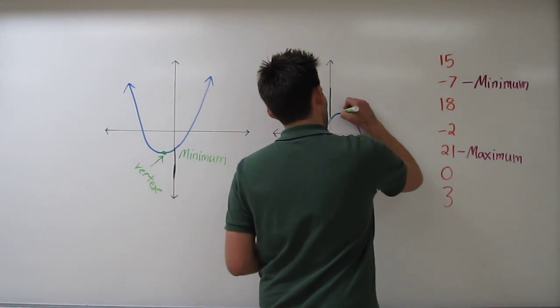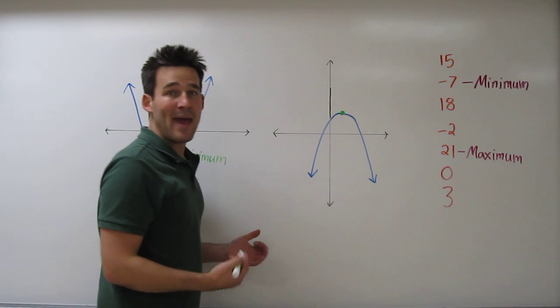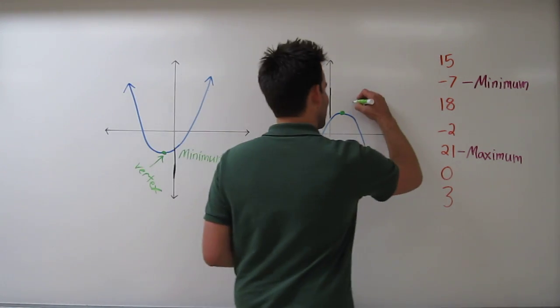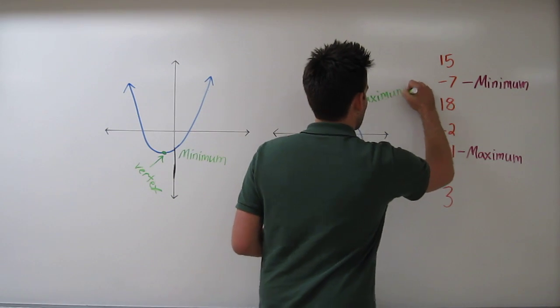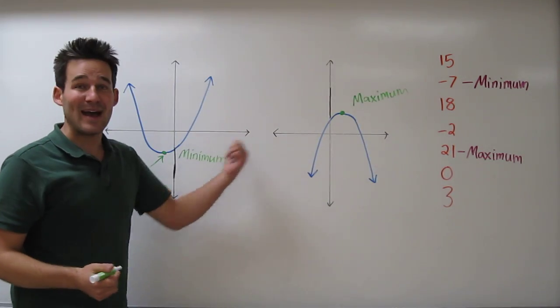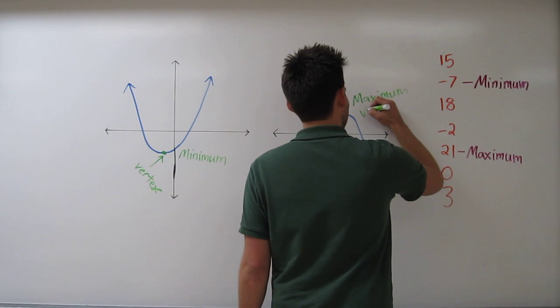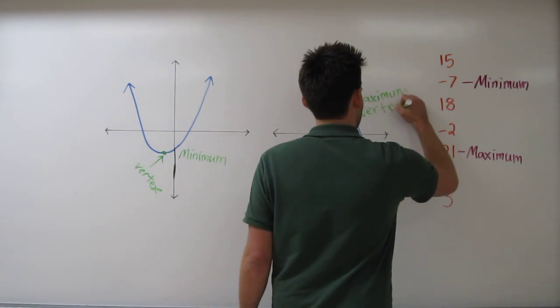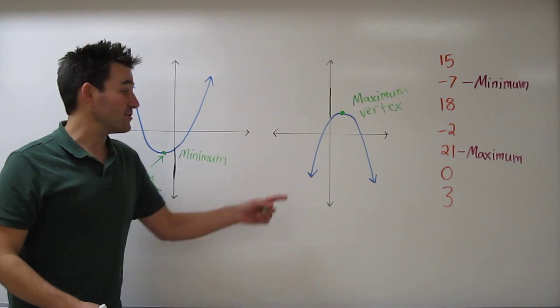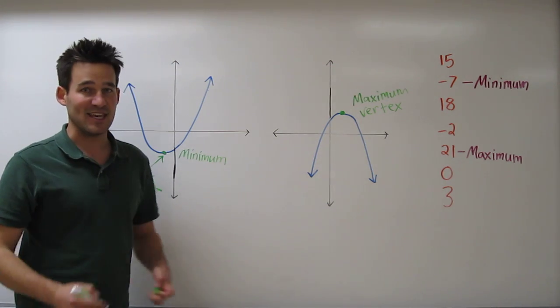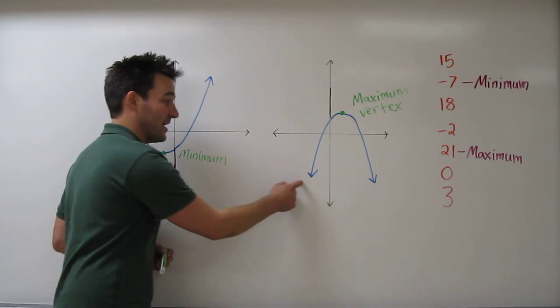I can see that this, right up here, is the maximum value of the function. So I'll write maximum. And again, the maximum is located at the vertex. We can't identify a minimum value because those arrows indicate the function just keeps going down, both here and here.